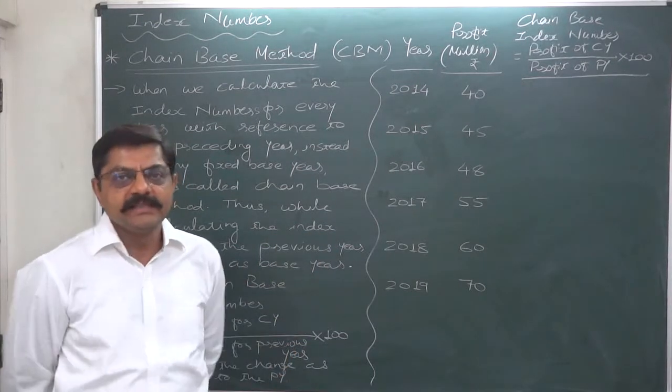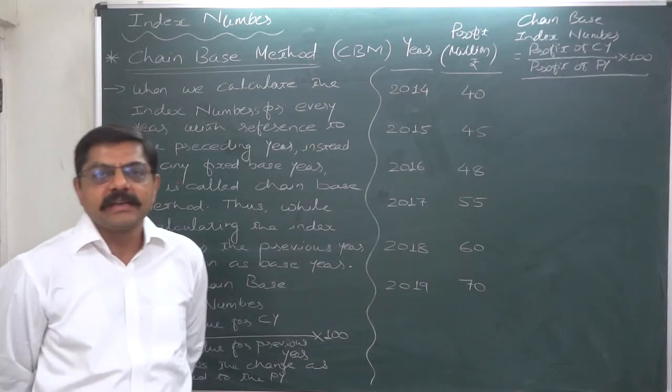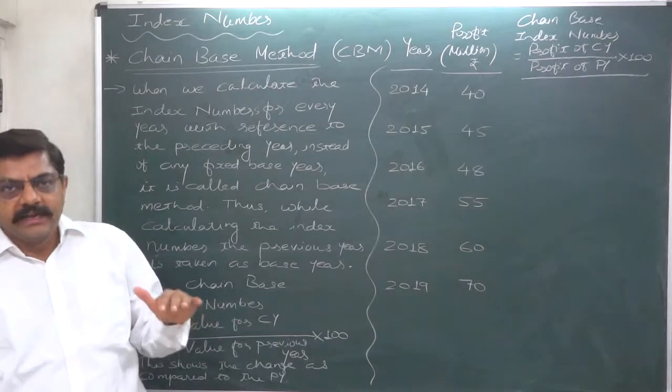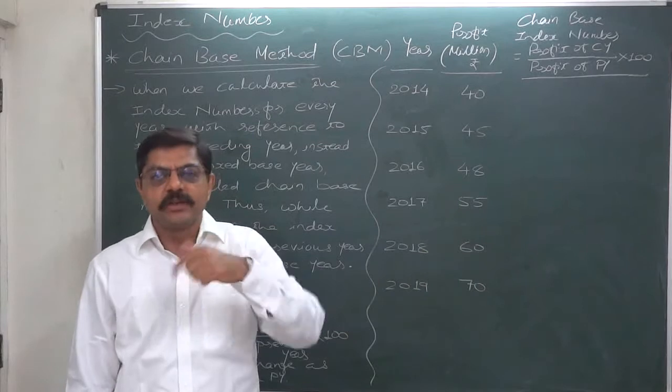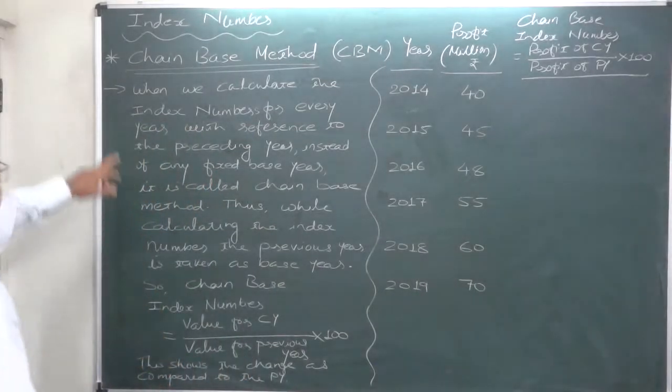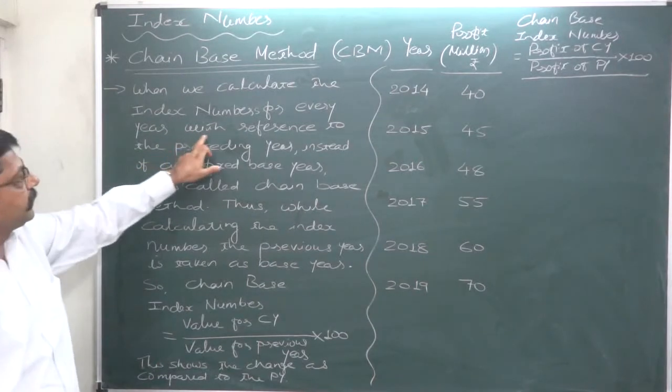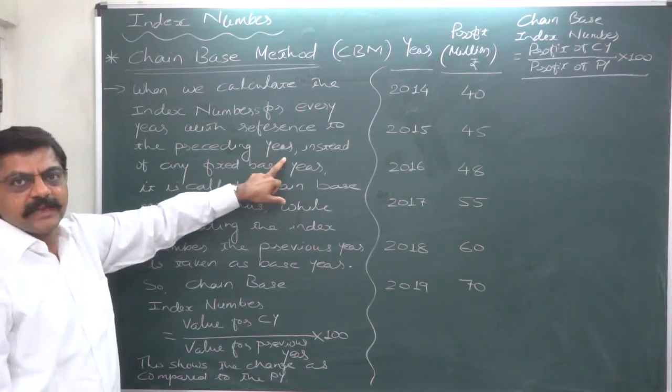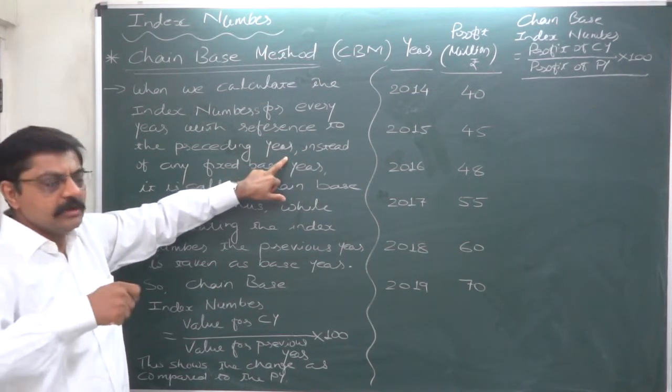In case of chain Base index number, Base year is not kept fixed. While calculating index number, the index number is calculated with reference to the previous year or previous period. We calculate the index numbers for every year with reference to the preceding year. Every year, the Base year will be the previous year.